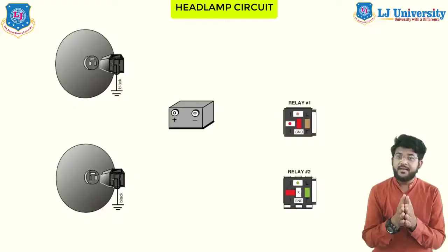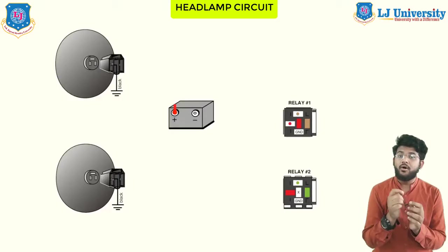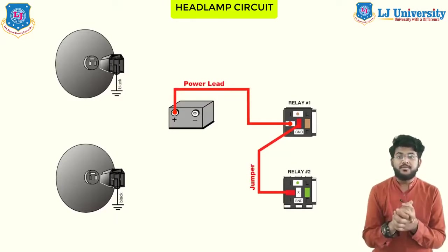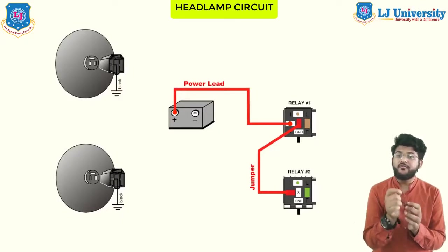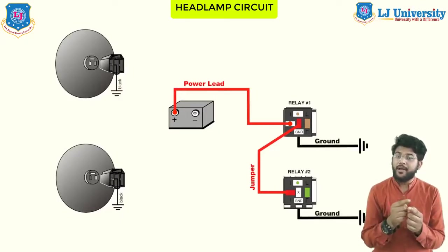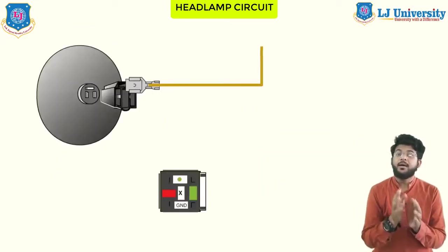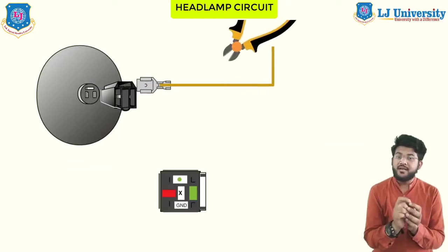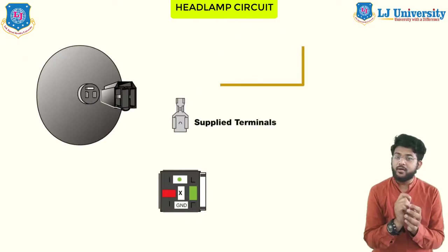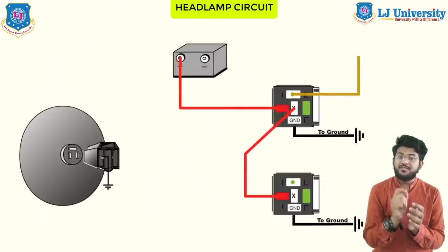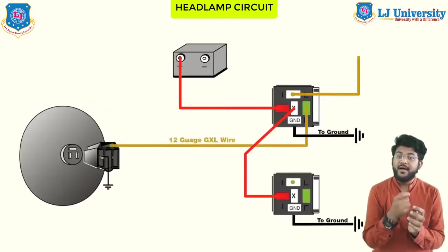The headlamp circuit is one of the most standardized automotive circuits because headlamp use is regulated by laws and had little change for some years. There are two basic types of headlamp circuits: the two-lamp circuit and the four-lamp circuit. Manufacturers select the type of circuit based on automotive body styling. Each circuit must provide a high beam and a low beam light, a switch or switches to control the beams, and a high beam indicator.